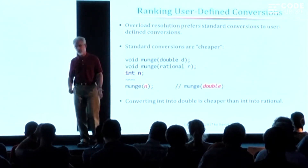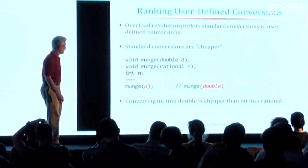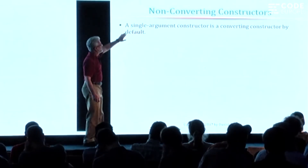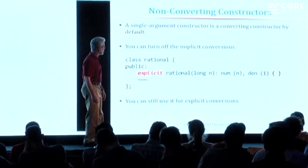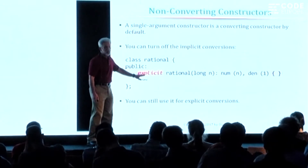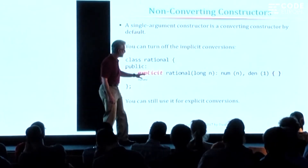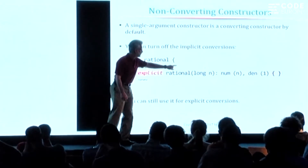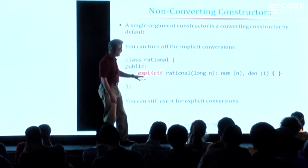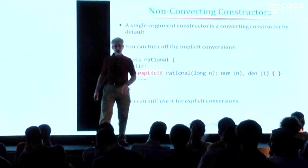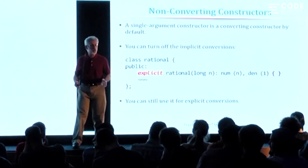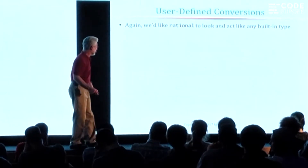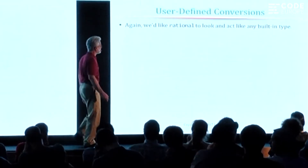All this stuff is ranked. A single-argument constructor is a conversion by default, but you can turn it off. If you want to have a constructor but don't want the compiler using it to implicitly convert a long into a rational, you just put the word explicit on the front of it — that says this can only be used if I do it explicitly. The implicit conversions will be turned off.